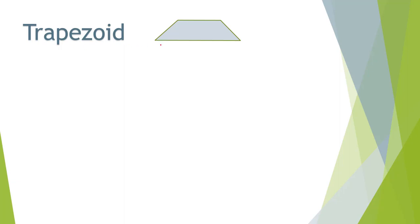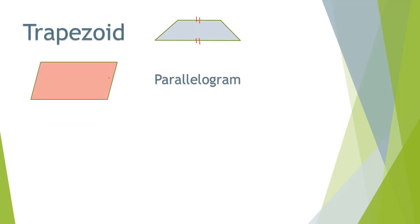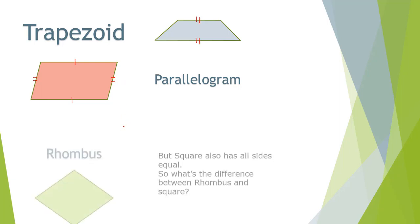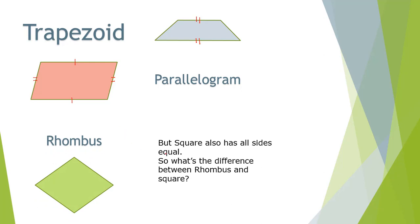A trapezoid is a quadrilateral where at least one pair of opposite sides are parallel. A parallelogram is a special trapezoid where both pairs of opposite sides are parallel. From this definition, a rectangle is also a parallelogram. Rhombus is a quadrilateral whose sides all have the same length.